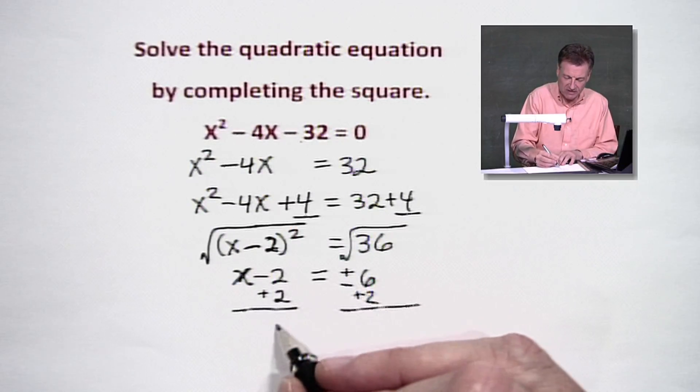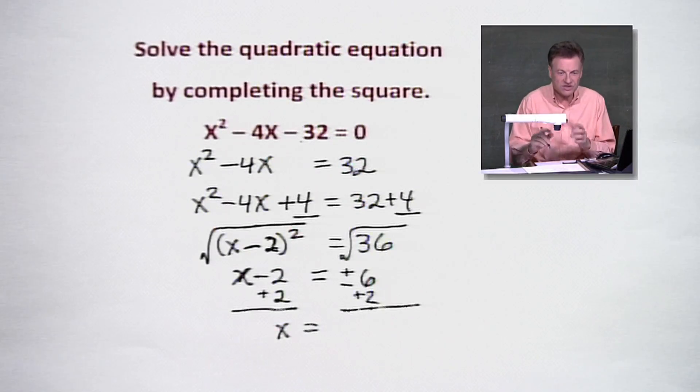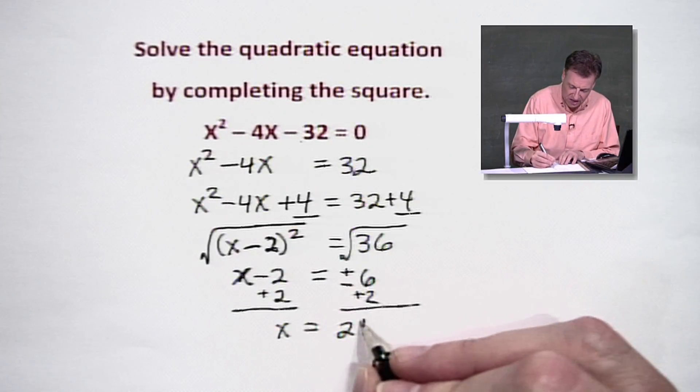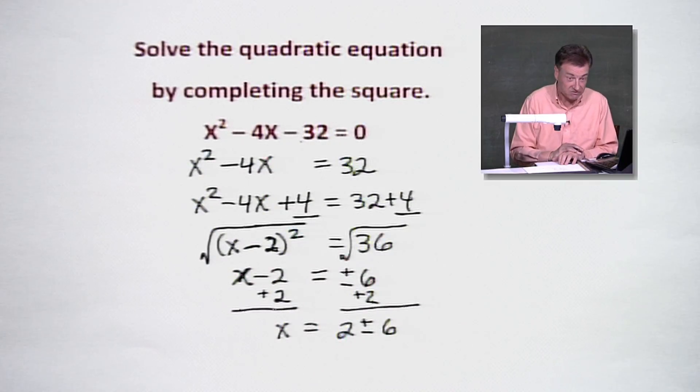So the solution, we have x by itself. And we're going to deal with this 2 plus or minus 6. Nice results here. And what are we going to do here? We're going to add 2 plus 6, which is going to give us 8. We're going to say 2 minus 6, which is going to give us negative 4.